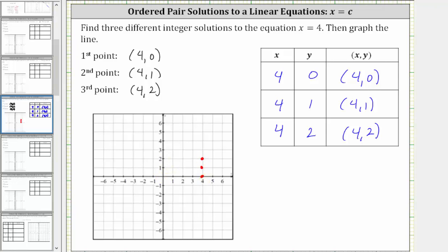And notice how the graph of the line is a vertical line passing through x equals four on the x-axis. Every point on this line has an x-coordinate of four, which is why every point on this line has an ordered pair that satisfies the equation x equals four.